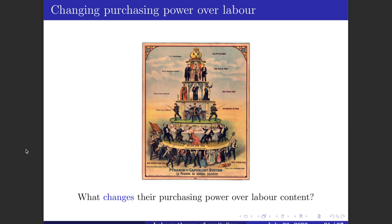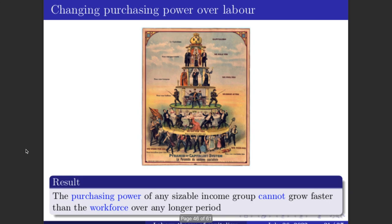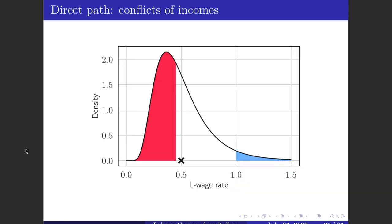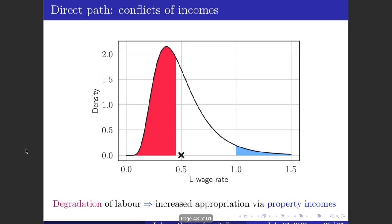The question arises: what changes the purchasing power over labor for different groups? We can set an upper limit — the purchasing power of any income group cannot grow faster than the workforce for any longer period of time; you simply cannot appropriate more labor than there is labor added to the economy. There are three paths through which purchasing power can change. The immediate one is the conflict over incomes: the more workers struggle to improve their wages, the distribution pushes upwards and the balancing point moves to the right, leading to a higher wage share. Conversely, as labor is degraded, the balancing point moves to the left and a larger labor content is appropriated by property owners.